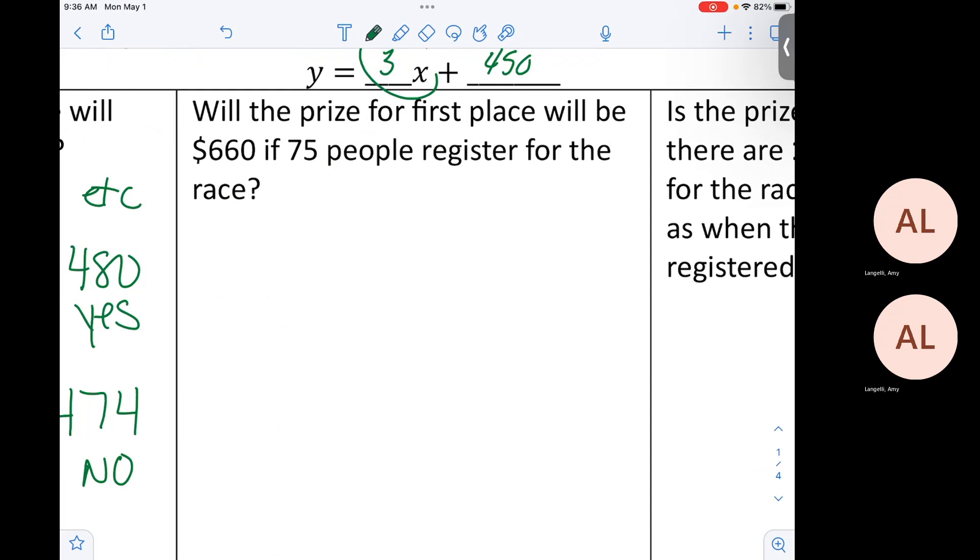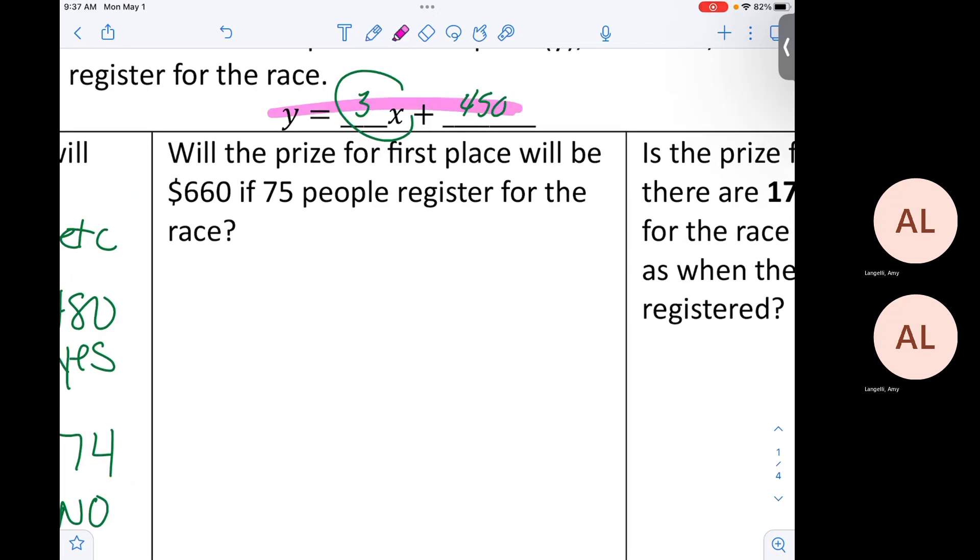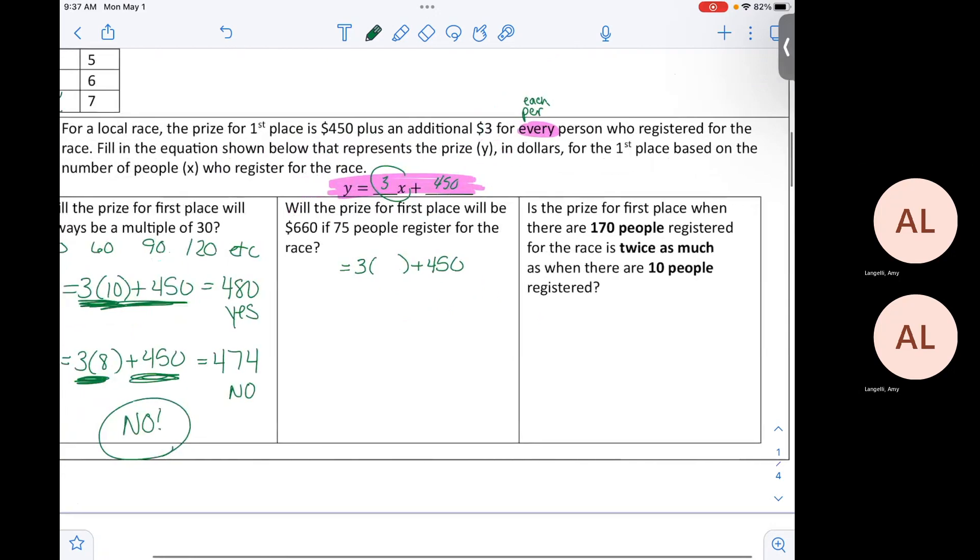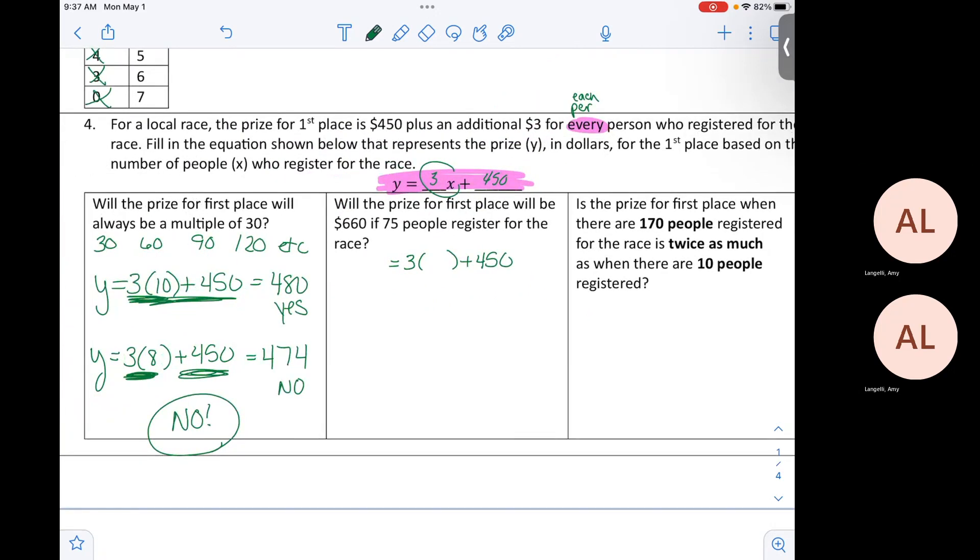What I did is instead of just having you solve this, I took the multiple choice and I made questions out of them. Will the prize for first place be $660 if 75 people register for the race? It's always this equation. What did X represent? Number of people. So what goes in for X then? Number of people.